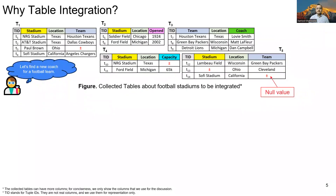Let's consider that our data scientist is helping a new football team having a new stadium to find their new coach. The football team wants to have a coach who has experience handling teams playing in front of large crowds in new stadiums. Consider that the data scientists already collected these five tables about football using different source techniques. Table T1 and T5 have information on football stadium, location, and team. Table T2 has information on when the stadiums were opened. Table T3 has information about coaches of different football teams, and table T4 shows the capacity of different stadiums.